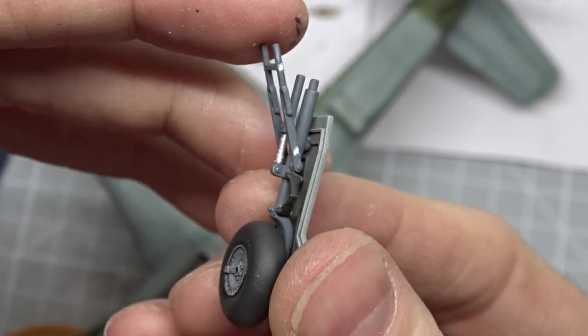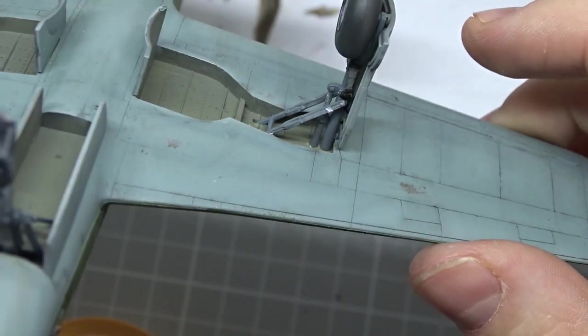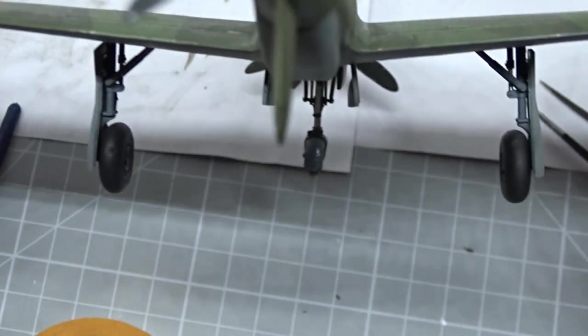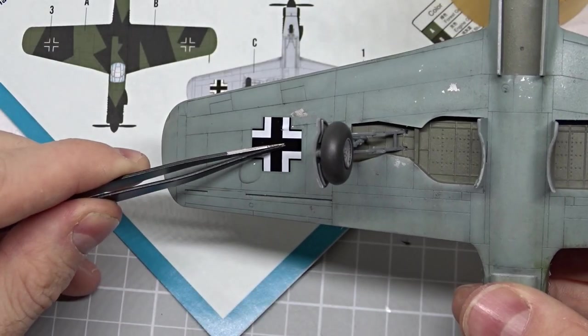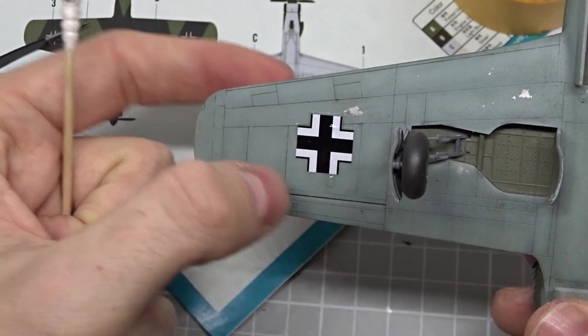Then I glued the landing gear in place. It's relatively detailed and stays in place nicely. After painting a few details it was time for the decals. If you want to know how I apply them, check out my beginner's guide video.